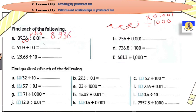Divide by 0.001 يعني كأنها multiply by 1000. طيب دي decimal point ما فيش. يبقى نزود three digits بعدها. So it will be 256 and three zeros.